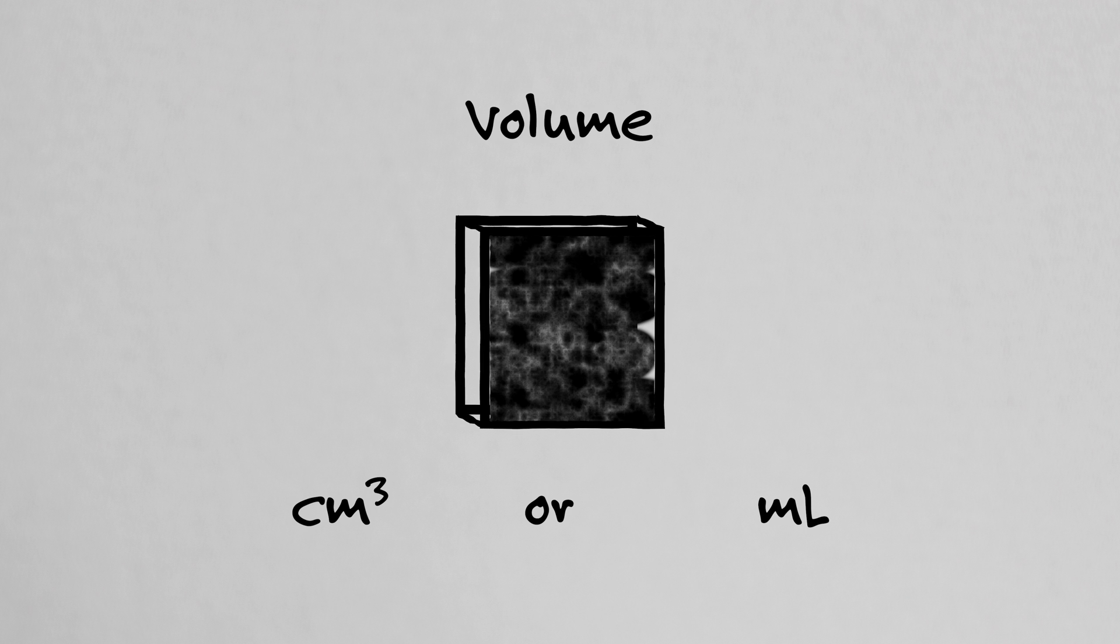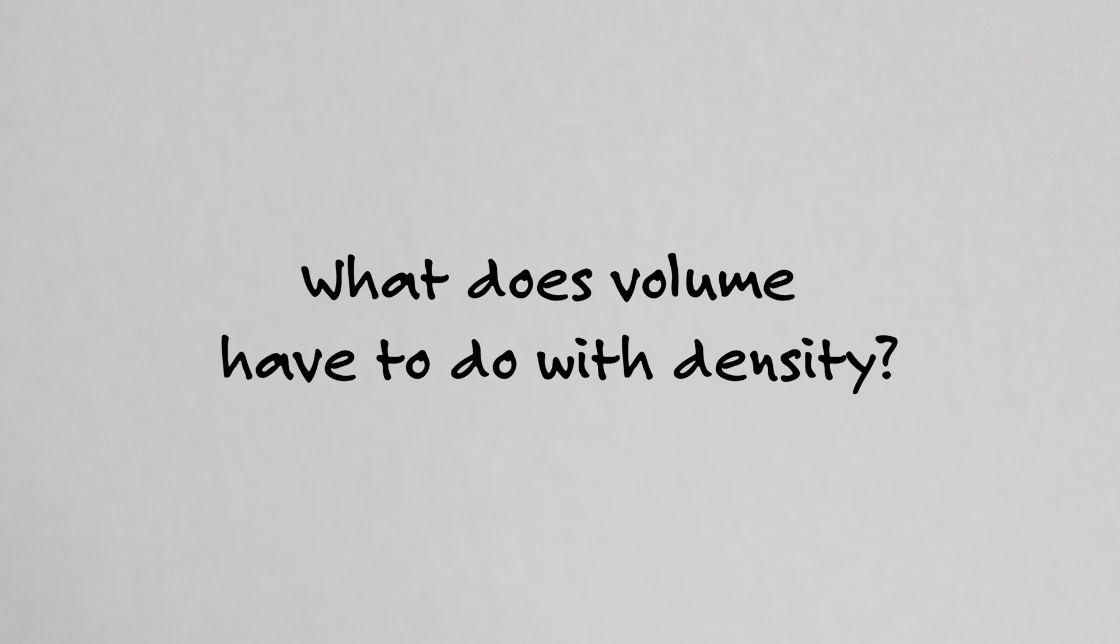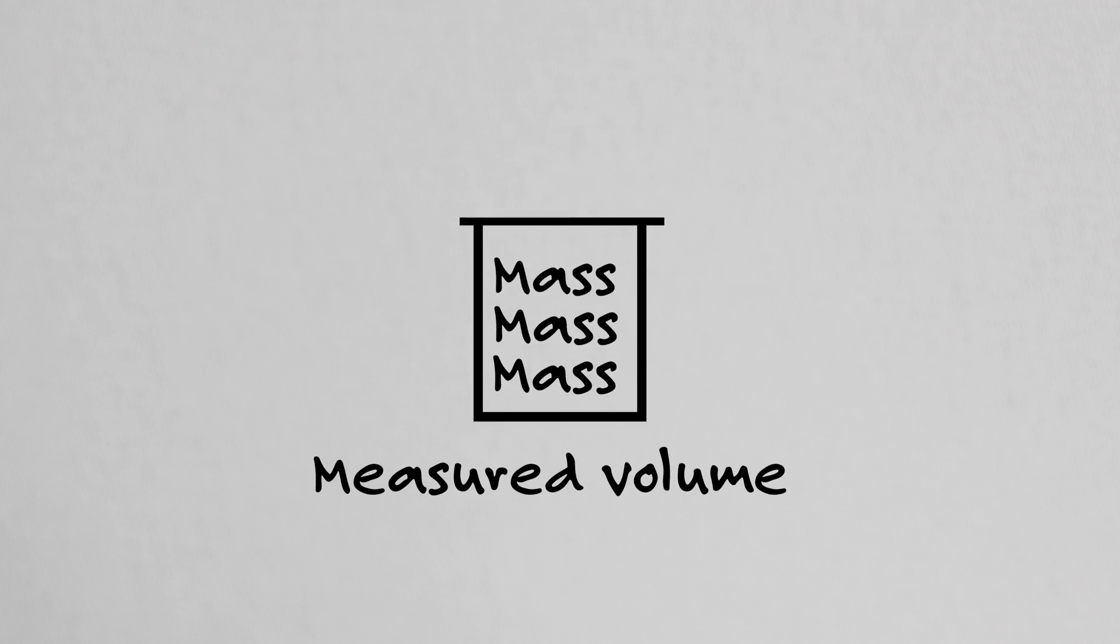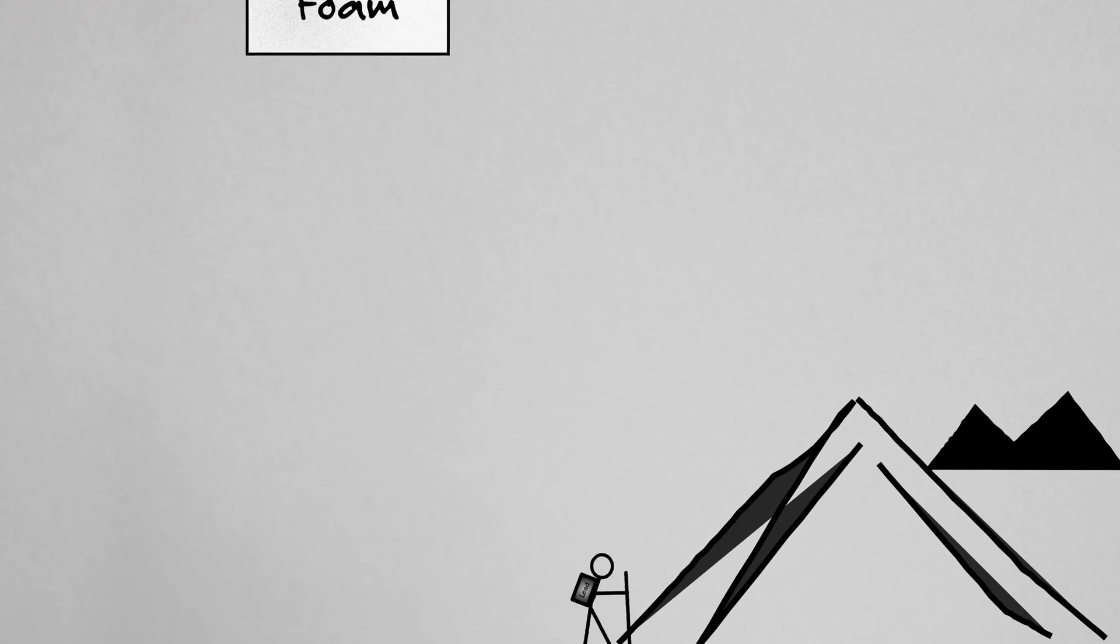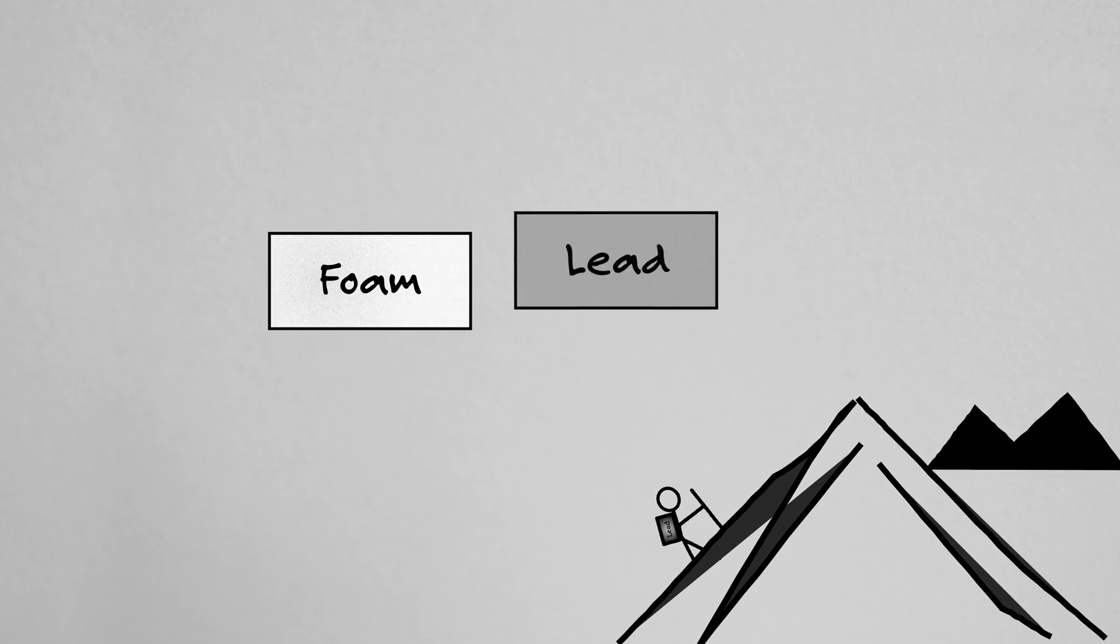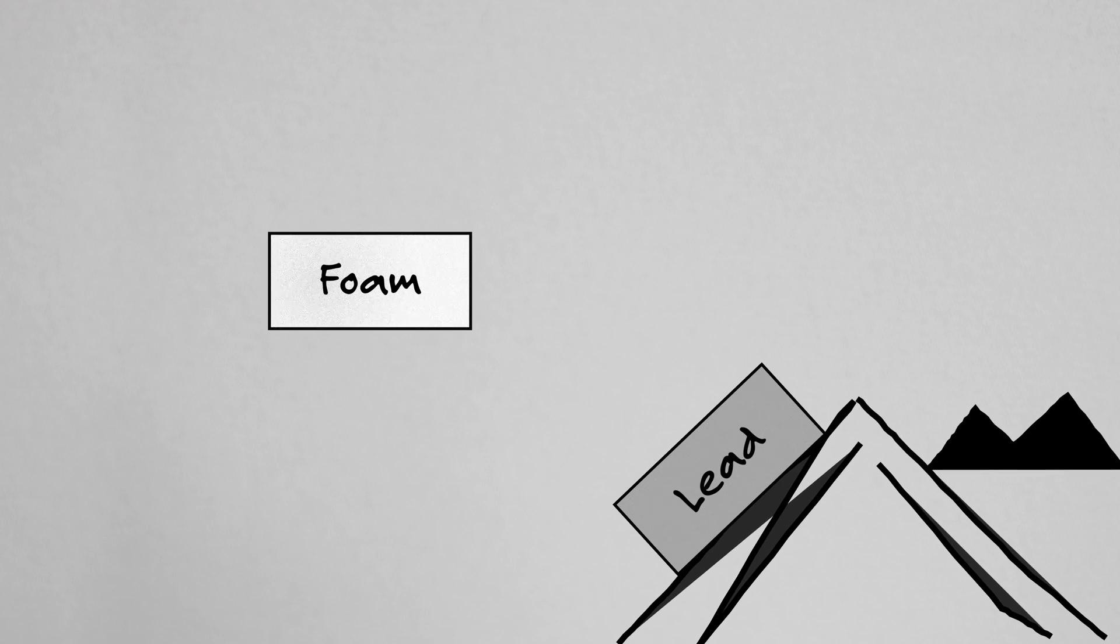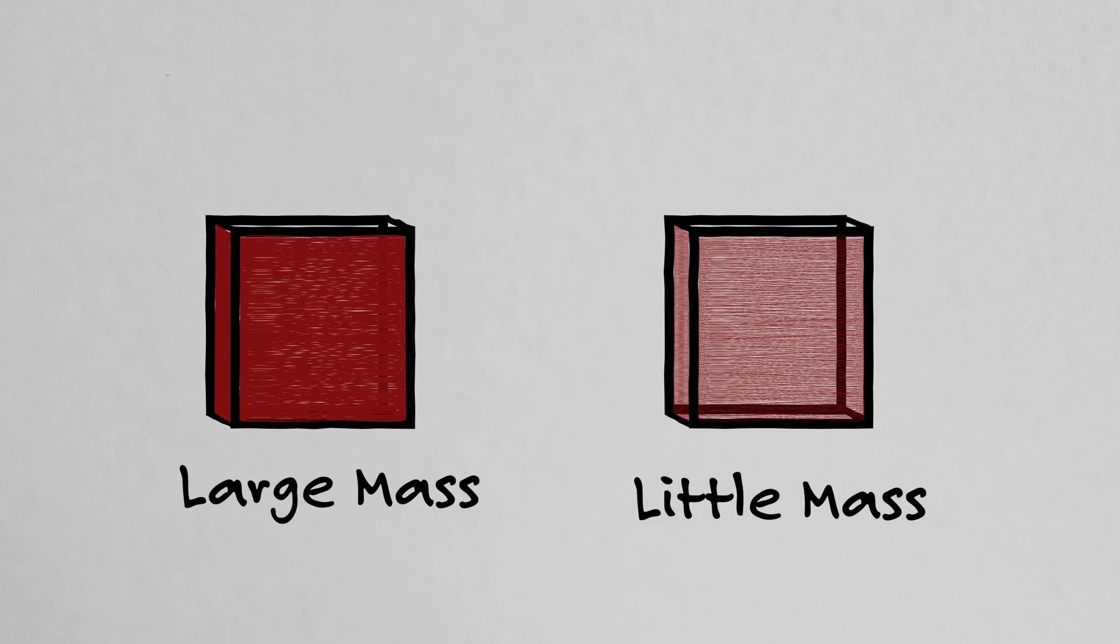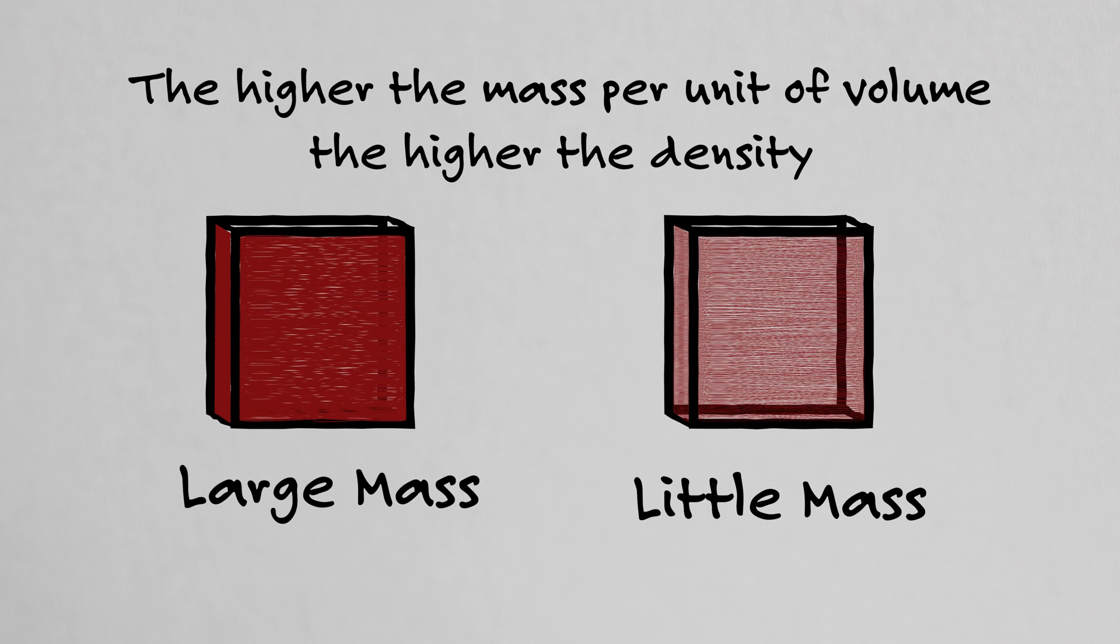Volume is usually measured in cubic centimeters or milliliters. What does volume have to do with density? Quite a bit actually. Density is how much mass of a substance you can have in a volume. We notice different densities almost every day. I suspect you would be more willing to carry a block of styrofoam up a mountain than an equal volume of lead. You can have a large object with very little mass or the same size object with a large mass. The higher the mass per unit of volume, the higher the density.